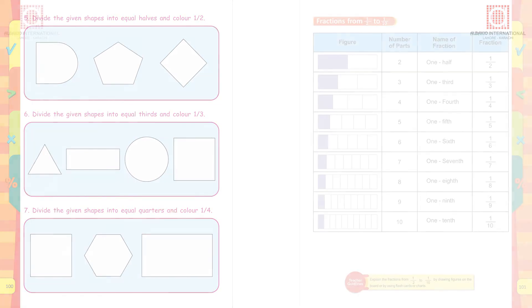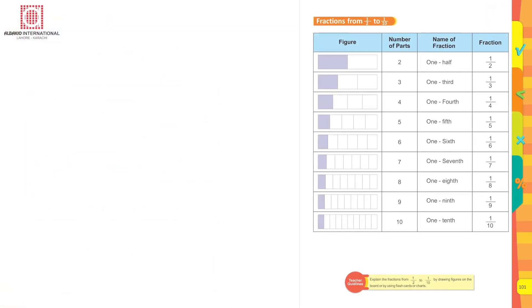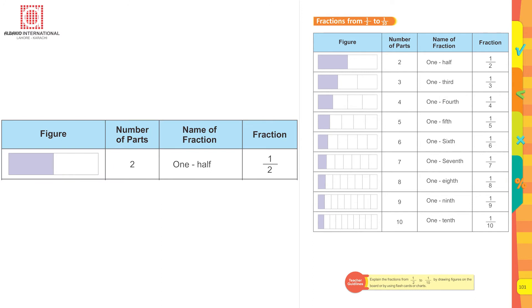Now do page number 100 the same way. Coming to page number 101: fractions from one upon two to one upon ten. In the first figure, divided into two parts — name of fraction: one half; numerically: one upon two. In the next shape, divided into three equal parts — name of fraction: one third; numerically: one upon three.